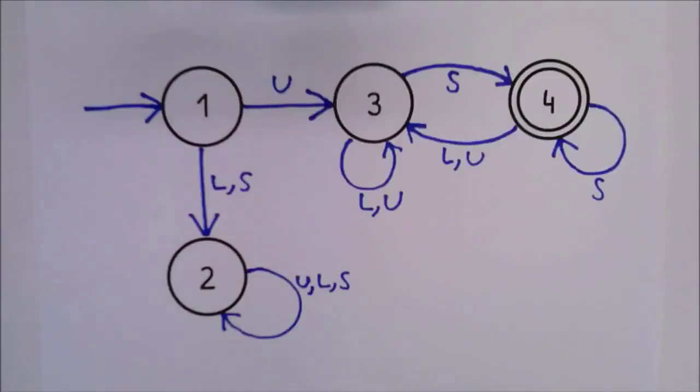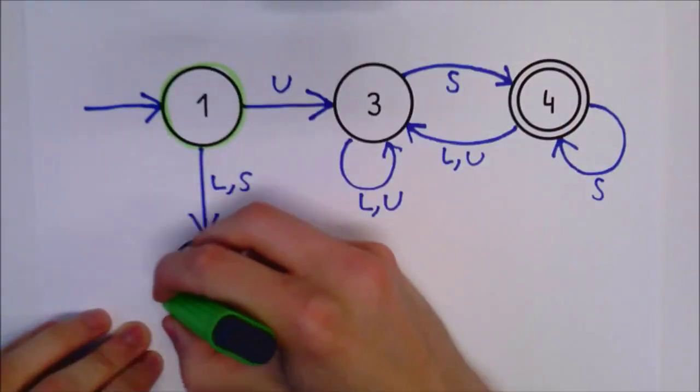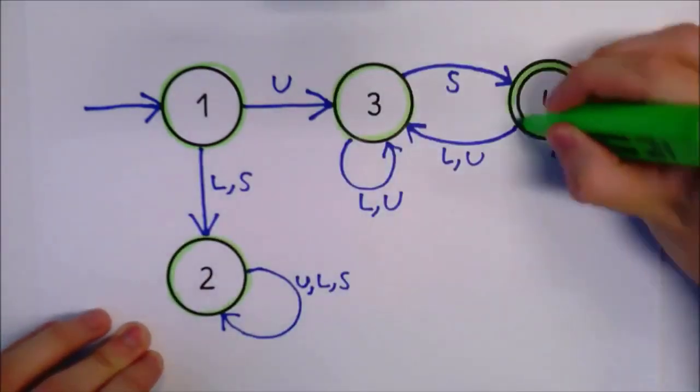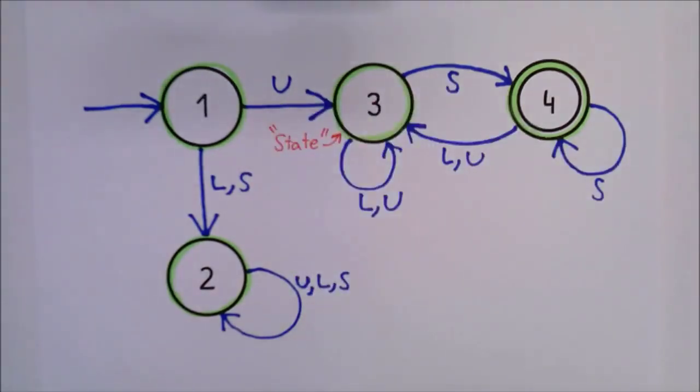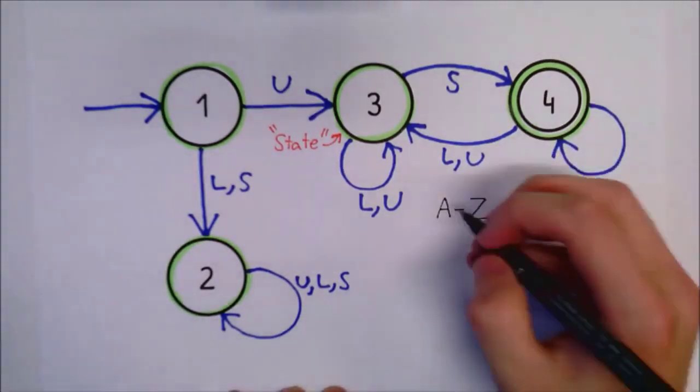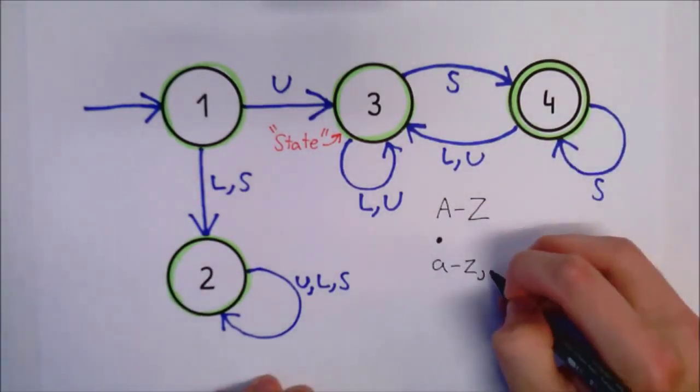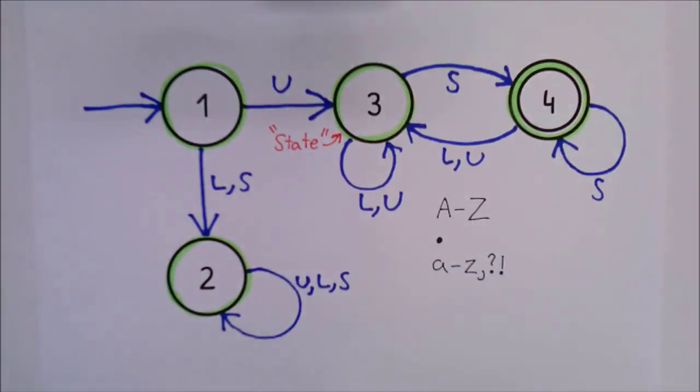Let's take a look at this simple automaton I made. Its purpose is to check that a given sentence starts with a capital letter and ends with a full stop. It may seem a little daunting right now, so let's look through it step by step. First, we can see that this diagram has four circles, labeled 1, 2, 3, and 4. These are the different states of our automaton. Between these states are arrows labeled with U for uppercase characters, S for a full stop, and L for lowercase characters, as well as any other punctuation.